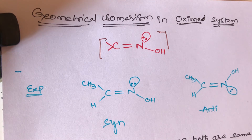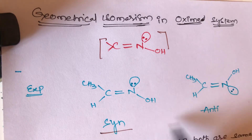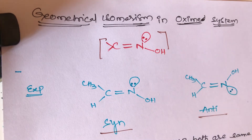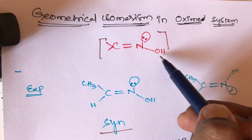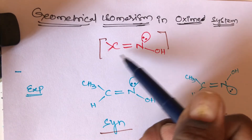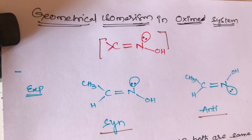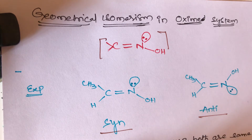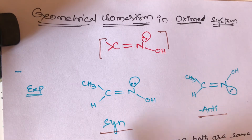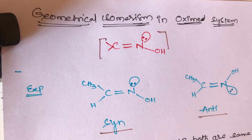Syn-oxime and anti-oxime are similar to cis and trans isomers. Oximes are formed in aldehydes and ketones: the aldehyde group forms aldoxime and the ketone forms ketoxime. Syn-oxime is similar to cis and anti-oxime is similar to trans.